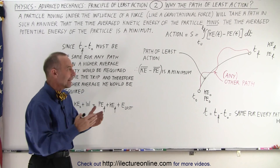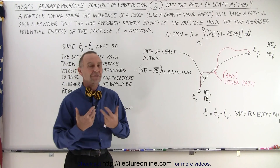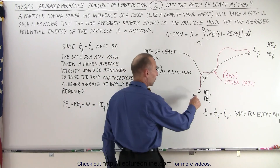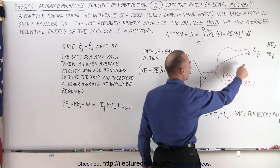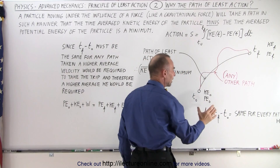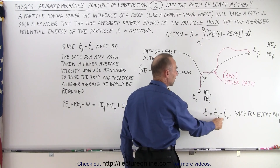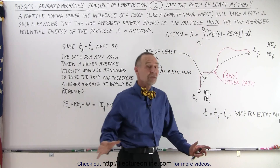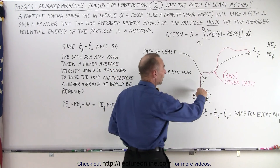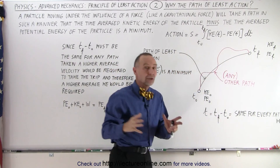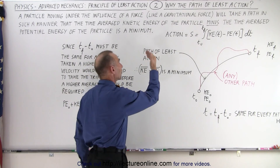Let's take a look again at our situation. Let's say that the particle is under the influence of a gravitational force and travels from one point to another. We have the initial time and the final time, and the time taken will be t-final minus t-initial, and that should be the same for every path the particle would take. We're going to assume that the black line truly represents the path the particle will take, and therefore we know that it's the path of least action.